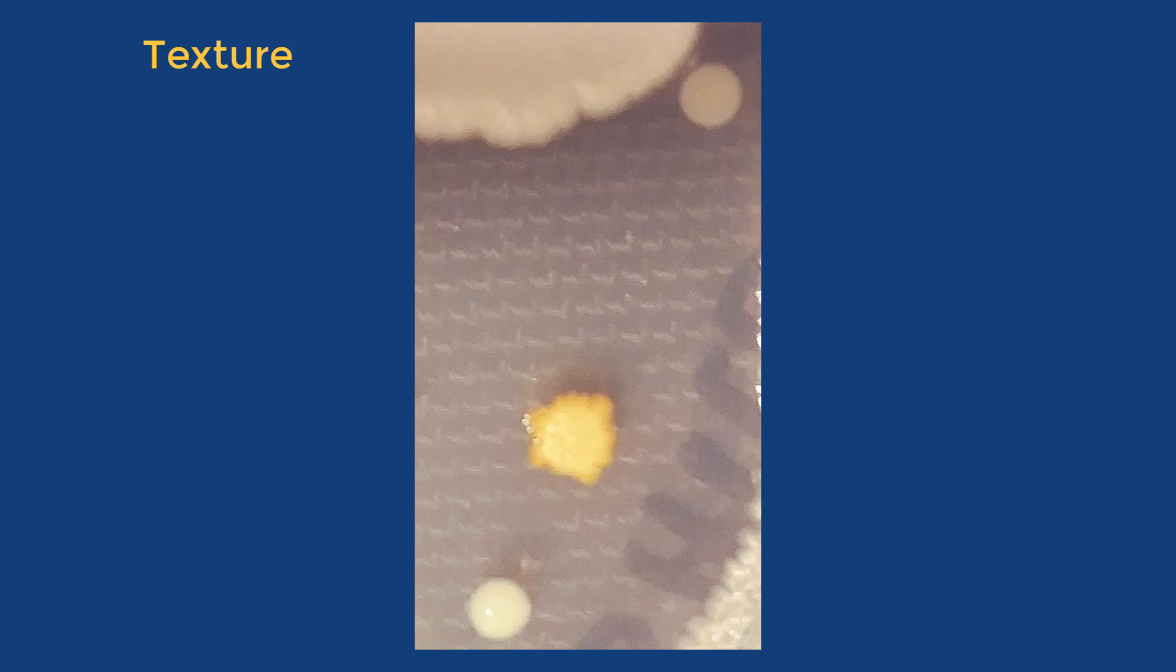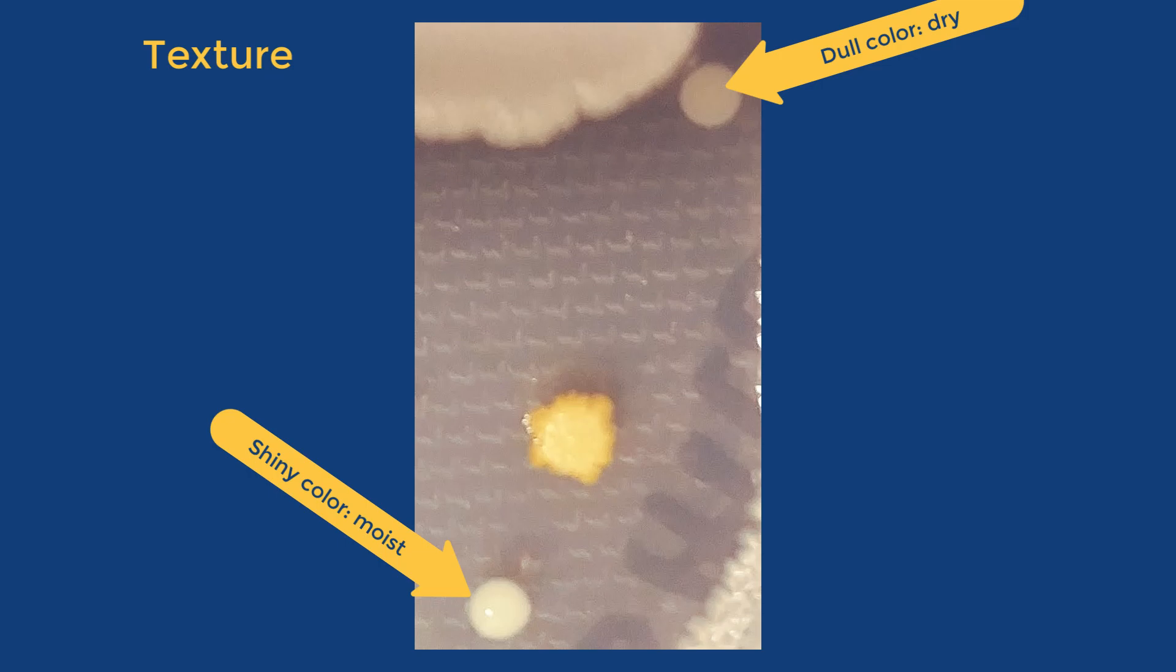The texture of the colony is determined by whether the colony holds on to a lot of moisture or not. If the color of the colony is flat, the texture is dry. If the color appears shiny, the texture is moist.